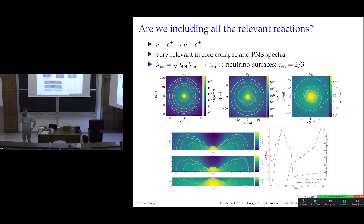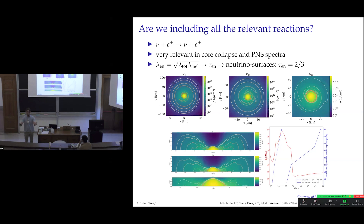This is similar to what happens in core collapse when the shock reaches the neutrinosphere and trapped neutrinos suddenly stream freely. In the merger case it is less clean because it's not a 1D process, but fluid elements that were hot and trapped can, through spiral-arm expansion, suddenly become optically thin and release their neutrinos. This mechanism contributes to the neutrino burst features seen in the luminosity light curves.